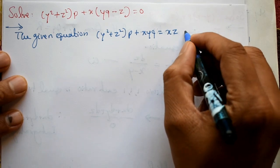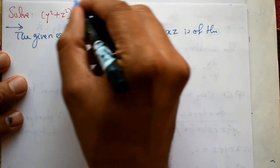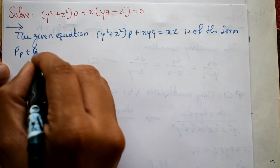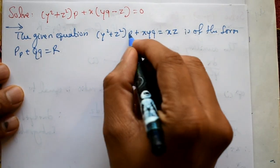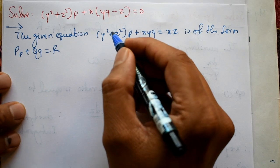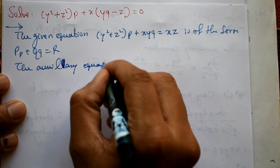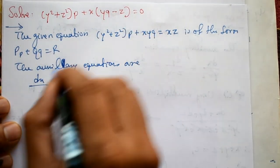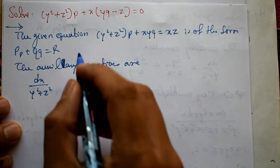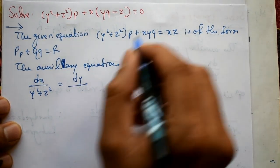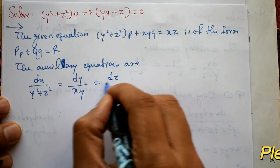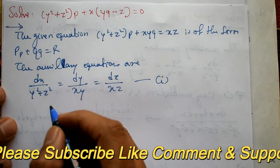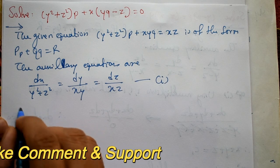This equation is of the form P·p + Q·q = R. The auxiliary equations are: dx/P = dy/Q = dz/R, that is dx/(y² + z²) = dy/(xy) = dz/(xz). This is equation number one.